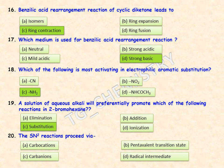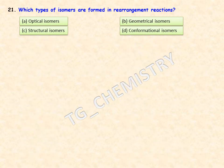SN2 reactions proceed via which intermediate? Options are carbocations, pentavalent transition state, carbanions, and radical intermediate. The correct answer is the pentavalent transition state.